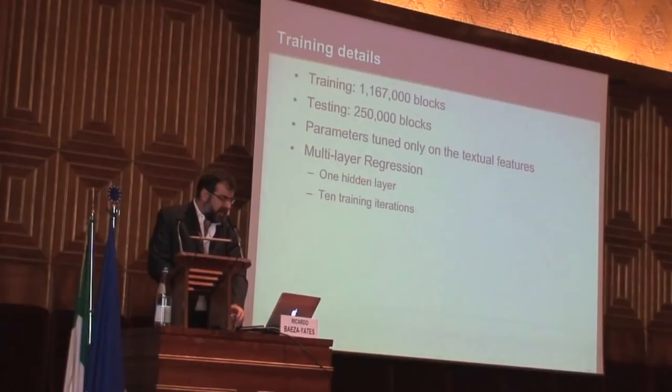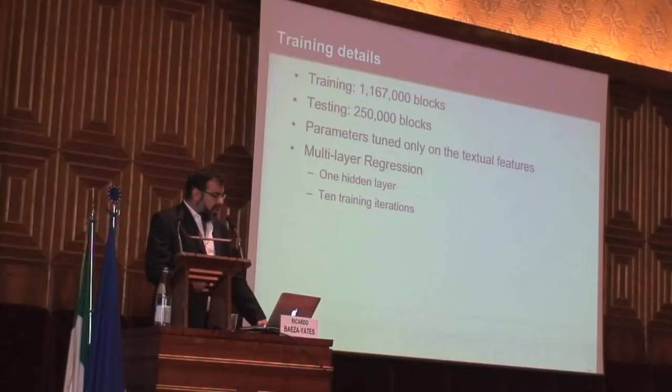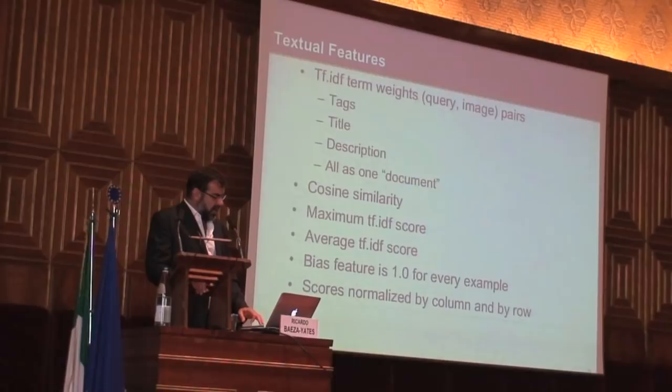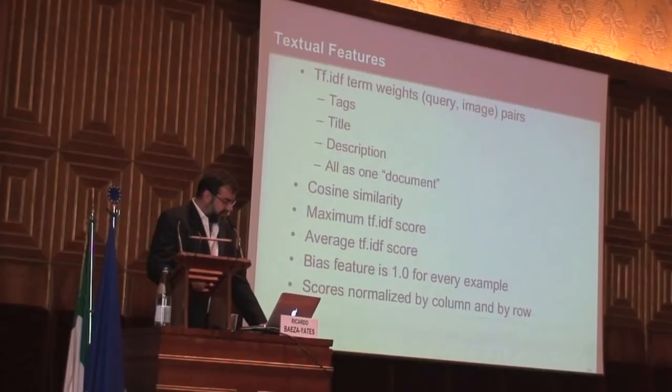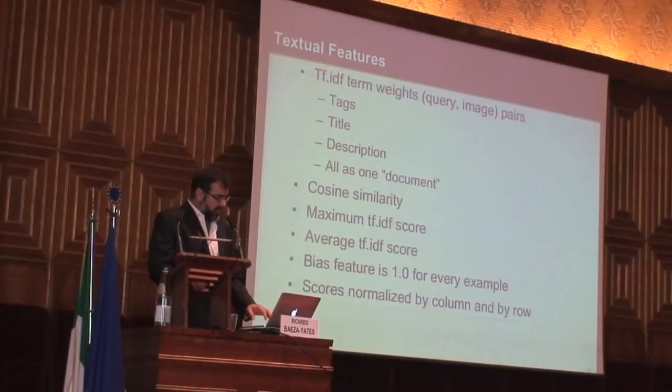For training, they use a bit more than one million blocks; for testing, 250,000 blocks with random division. The parameters were tuned only on the texture features. It's a perceptron — one hidden layer and 10 training iterations. The features are the standard things in text search: TF-IDF over the tags, the title, the description, cosine similarity, maximum TF-IDF score, average TF-IDF score, and so on. The scores are normalized by column and by row.